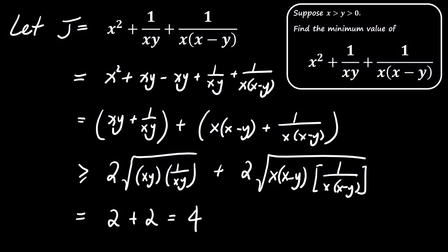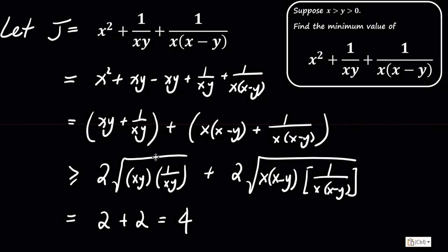Now, adding the results from both parts, we get that J is greater than or equal to 2 plus 2, which equals 4. This means that the minimum value of J is at least 4.